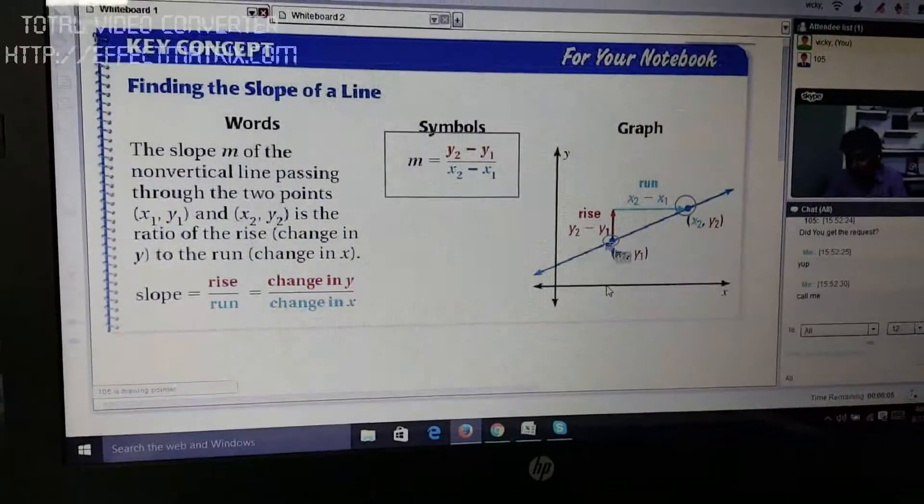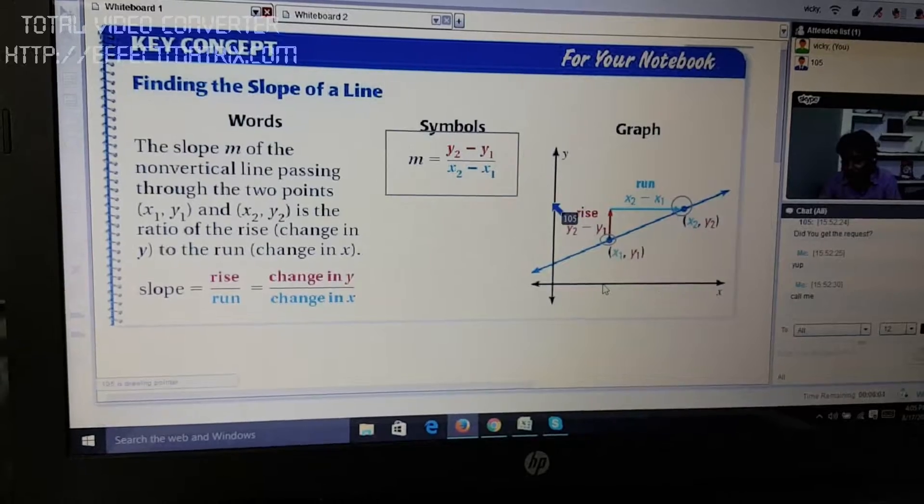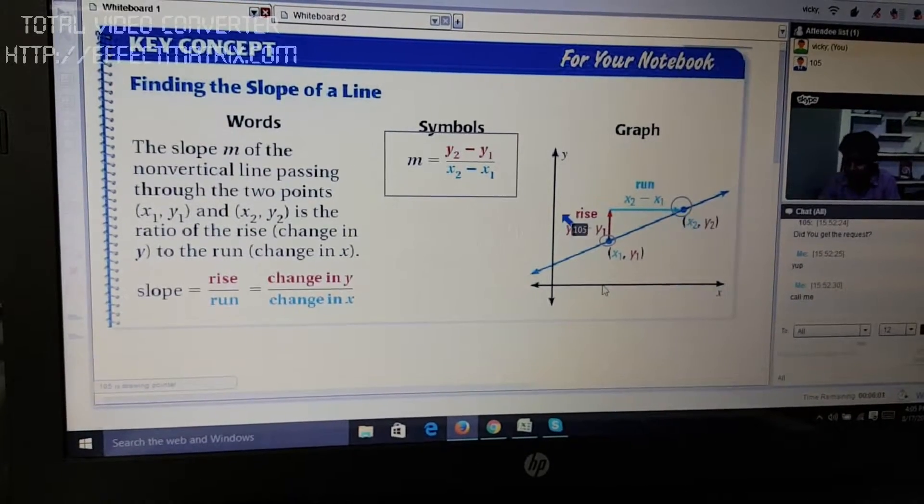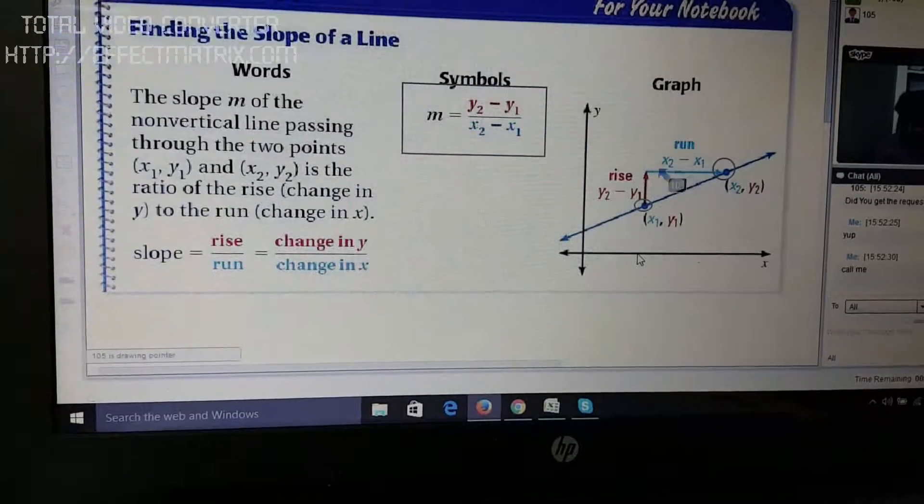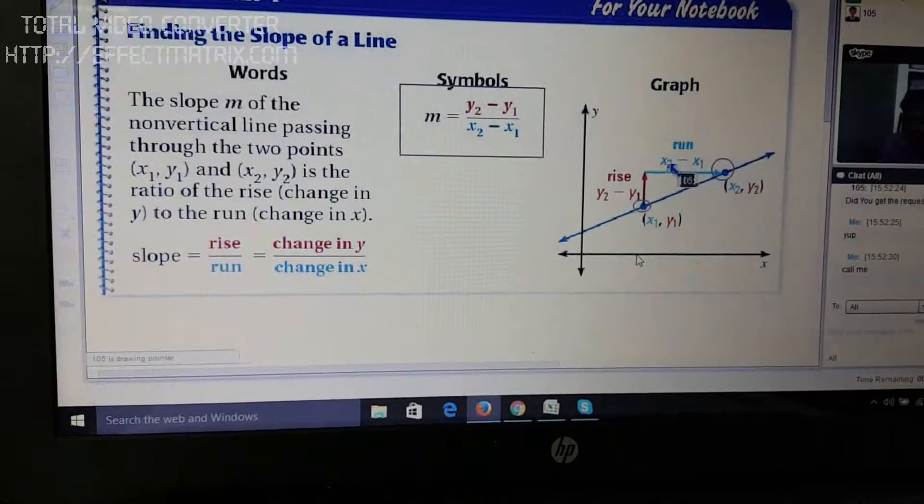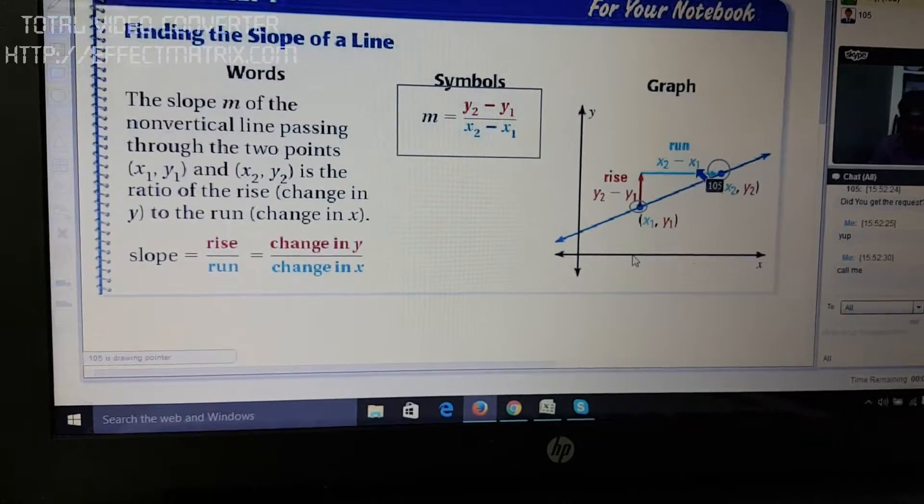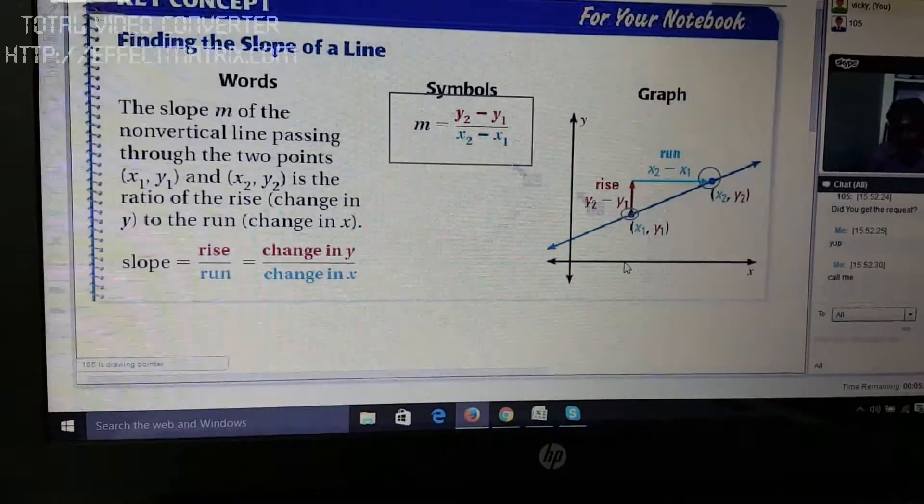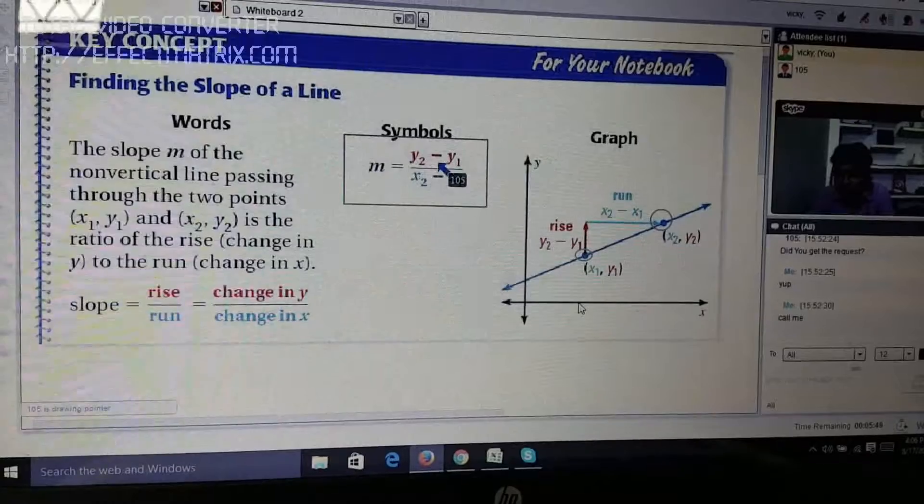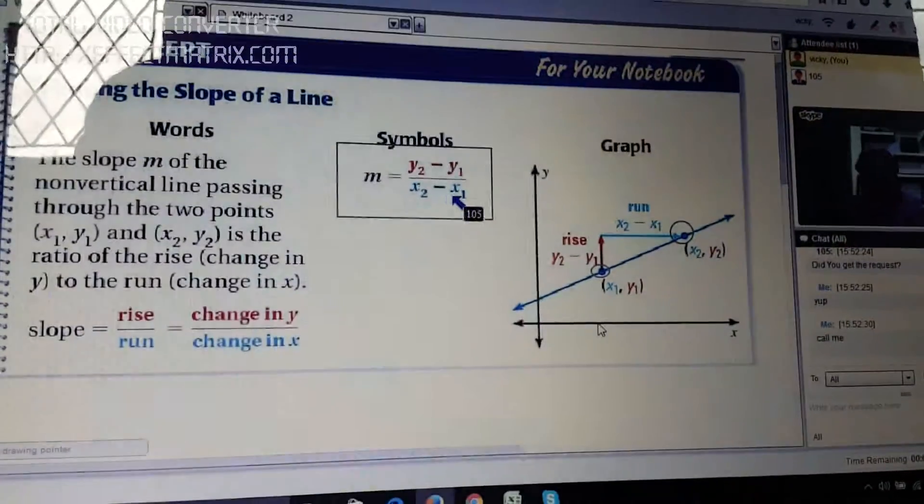Similarly, this is x1 distance. At the same time, this particular distance is the x2 distance. If you wish to get the horizontal shift, you will be just subtracting x1 from x2. So, these values have been substituted here: y2 minus y1 over x2 minus x1.